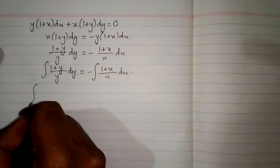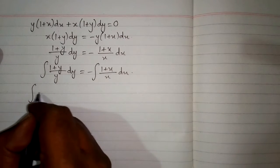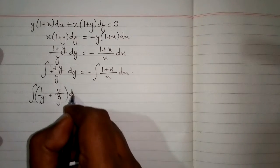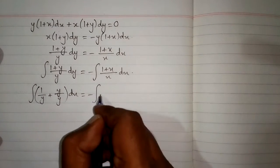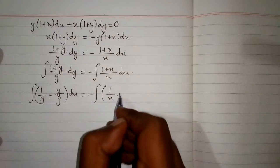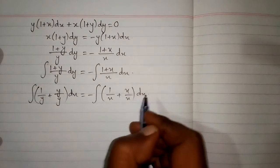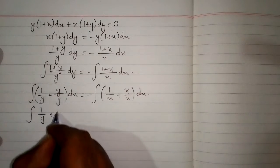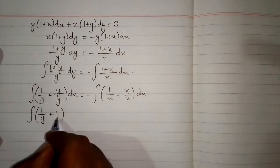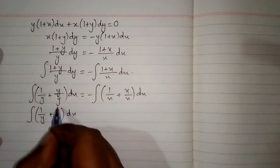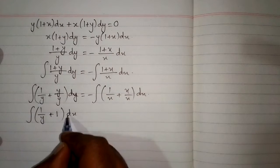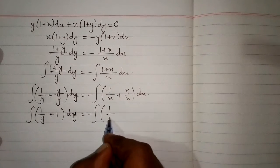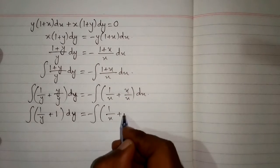This can be written as 1 upon y plus y upon y dy on the left, and minus (1 upon x plus x upon x) dx on the right. We cancel y over y to get 1, and cancel x over x to get 1, simplifying the integrands.